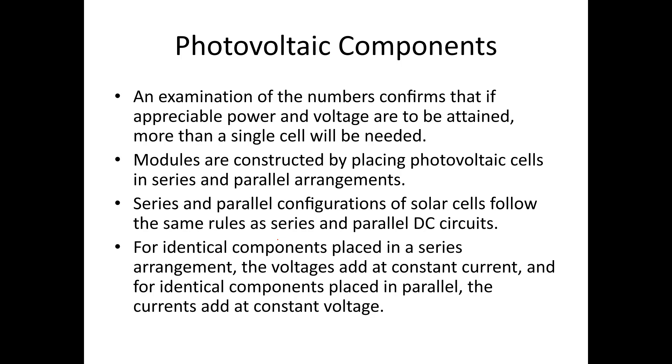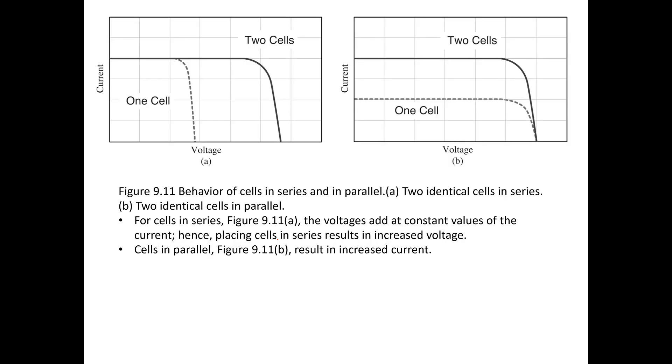Let's look at a quick example. Here you have the behavior of solar cells in series and parallel. So the graph to the left shows two identical cells in series, and on the right-hand side, you see two identical cells in parallel.